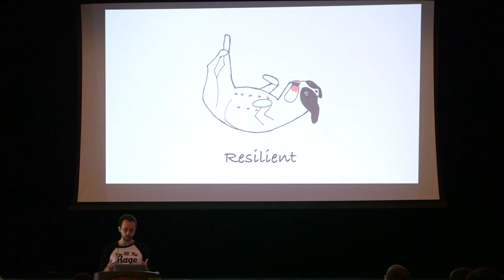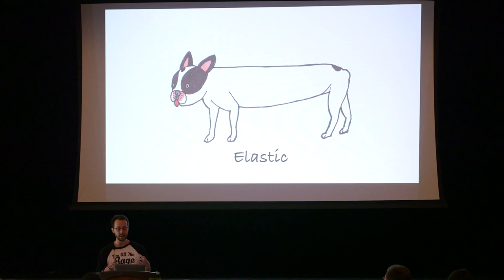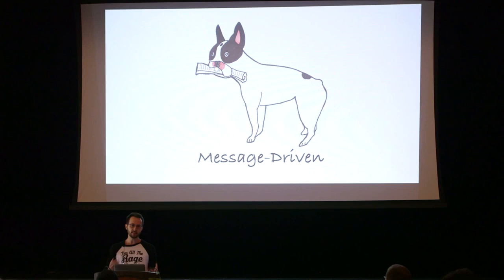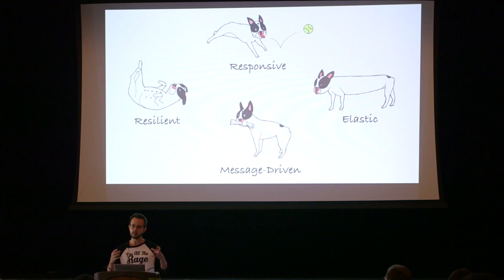The second principle is that reactive systems are resilient, which means that they respond to failure — they get back up when they're knocked down. The third principle is that they're elastic, which means they maintain consistent responsiveness in the face of varying load. And finally, they're message-driven, meaning they communicate via a message-passing pattern — they're not going to be in the same process directly connected. It's important to keep in mind that these things interact with and support each other. This is a design paradigm, not an arbitrary choice of four principles.